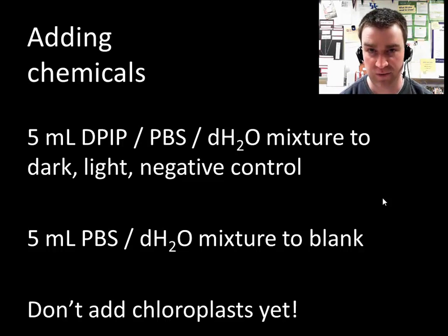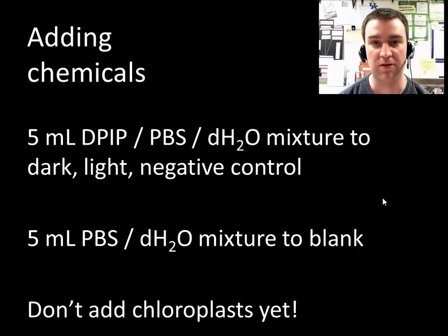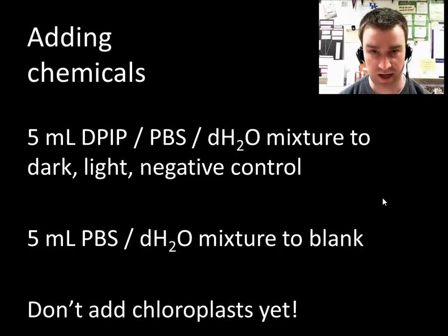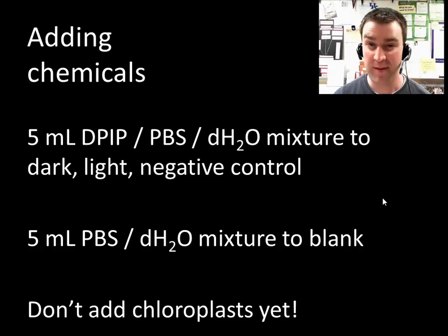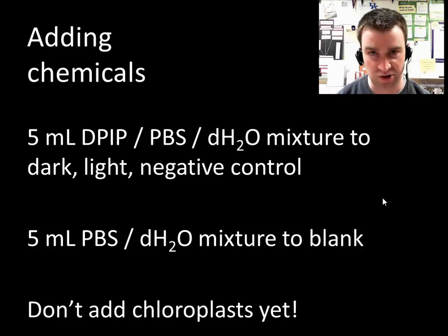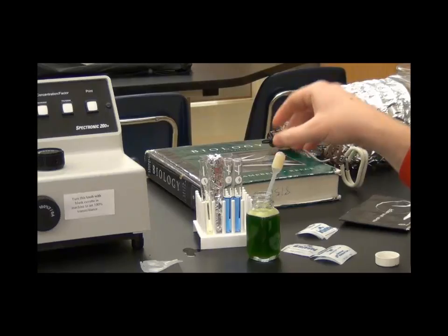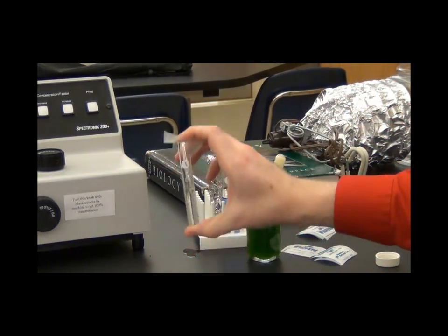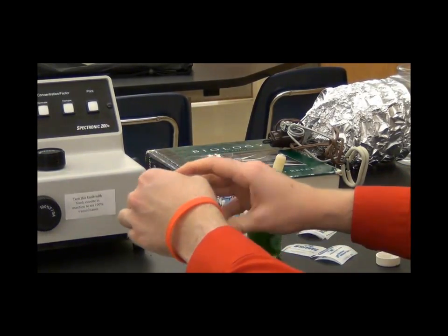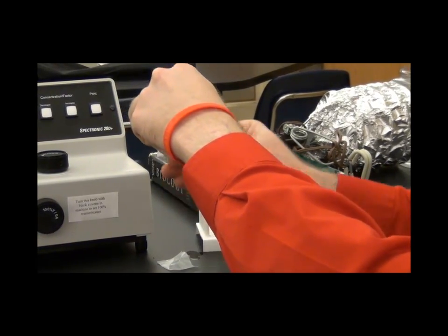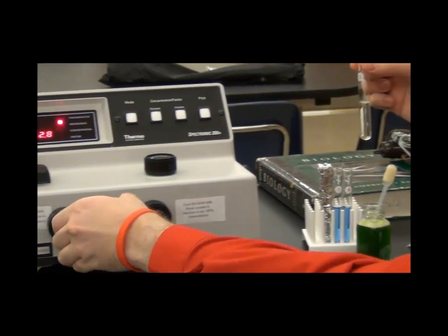When you're ready to add chemicals, use your pipettes to add five milliliters of the DPIP, phosphate buffer, and water mixture to the three cuvettes that get them: the dark, the light, and the negative control. I will add the five mils of phosphate buffer and water to your blank. Don't add the chloroplasts just yet — as soon as you add the chloroplasts with DPIP around them, it might start turning clear. Add spinach chloroplasts to the blank only first — three drops — then mix with parafilm. Whenever you put any cuvette into the spectrophotometer, wipe the sides with tissue paper first.